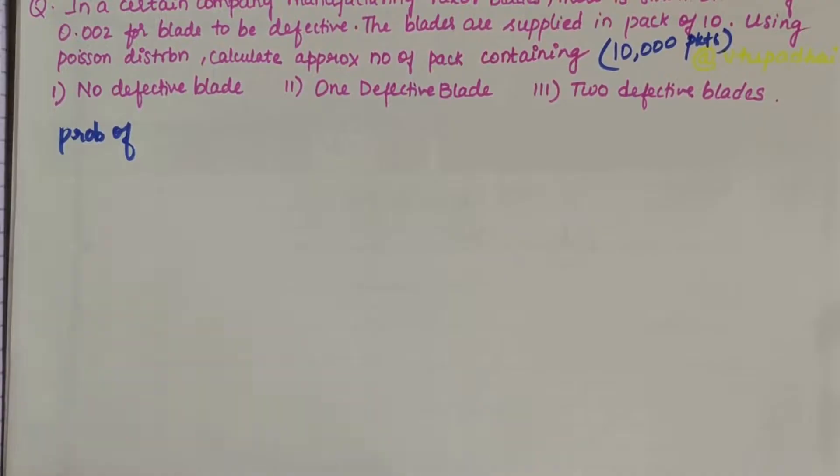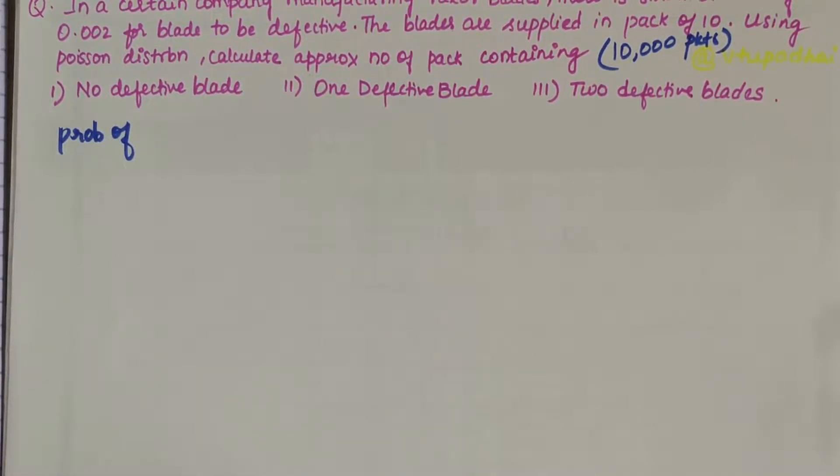In this video, we will be solving a numerical problem related to Poisson distribution. The problem statement says: In a certain company manufacturing razor blades, there is a small chance of 0.002 for a blade to be defective.